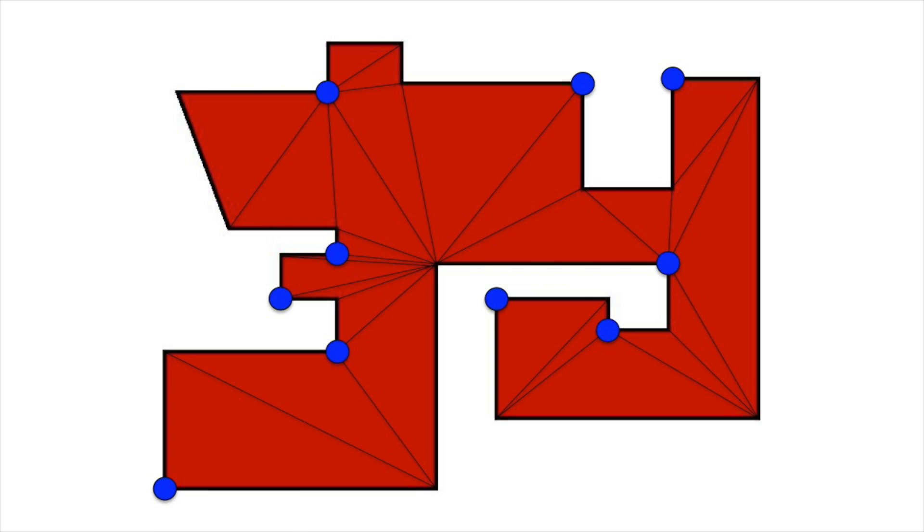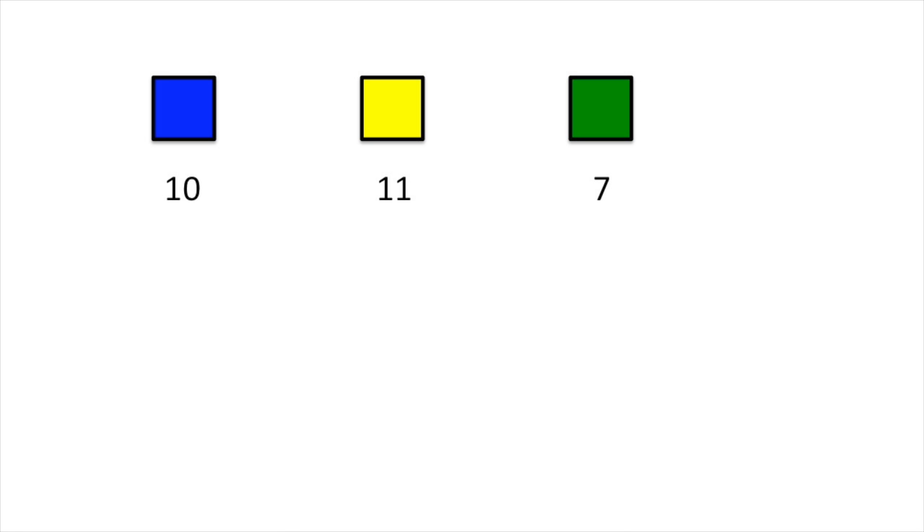But the same argument could be made for the yellow corners as well as the green corners. In this example, we have ten blues, eleven yellows, and seven greens for a total of 28 corners. By placing guards at the seven green corners, less than one-third of the corners are needed to observe the whole museum.